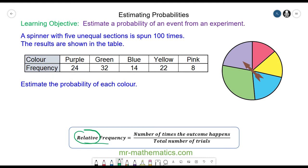A spinner with five unequal sections is spun 100 times. The results are shown in the table.